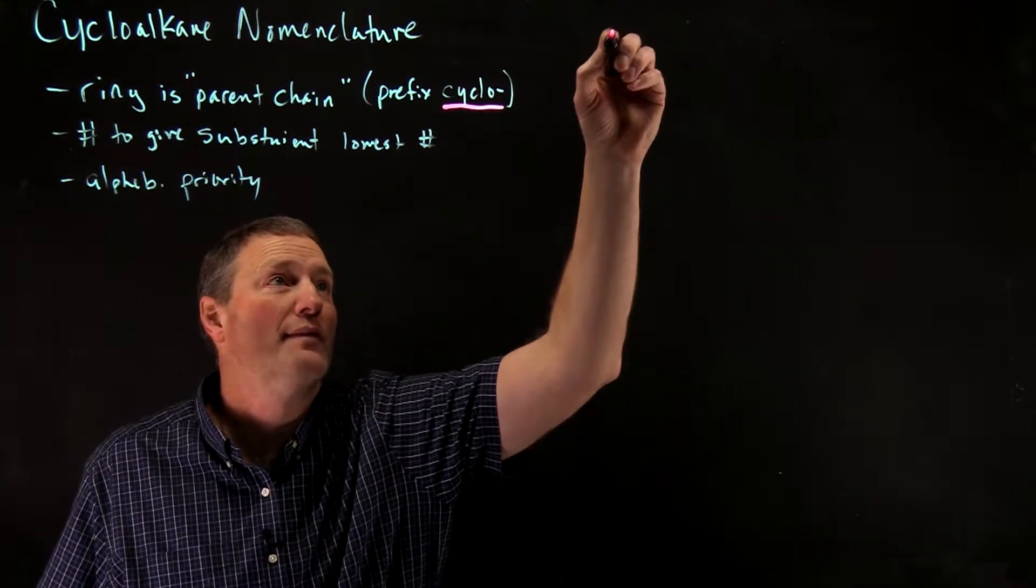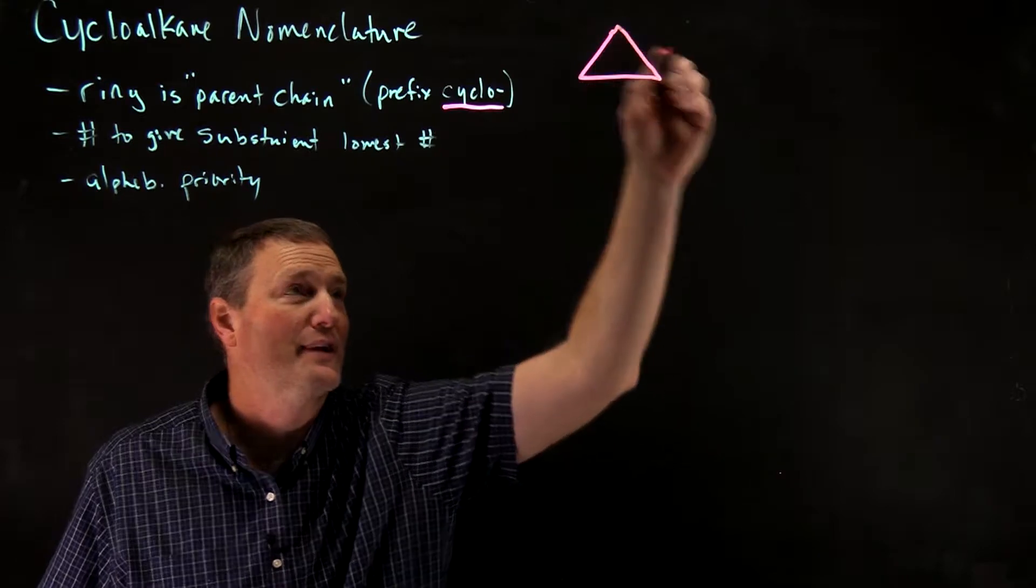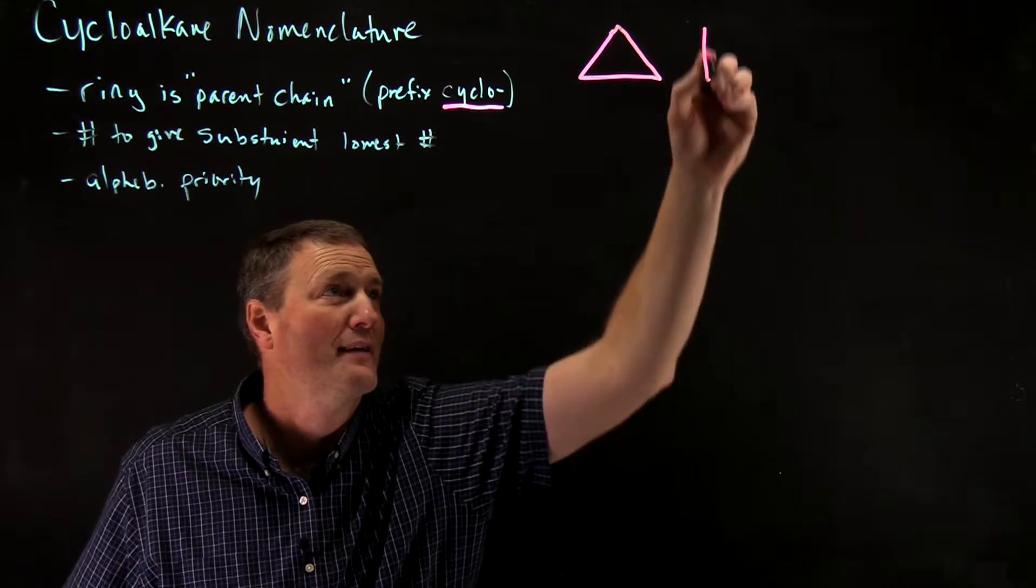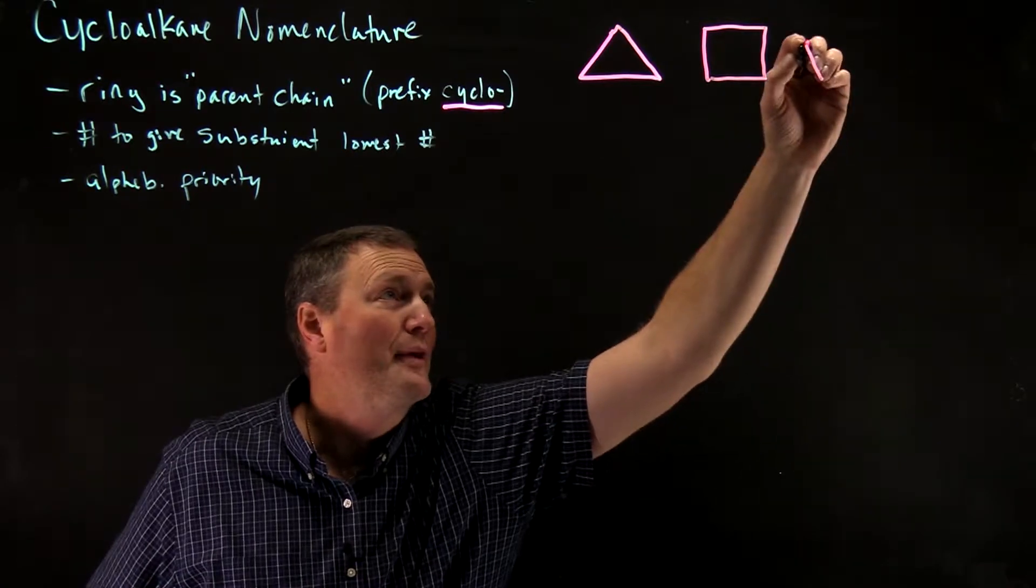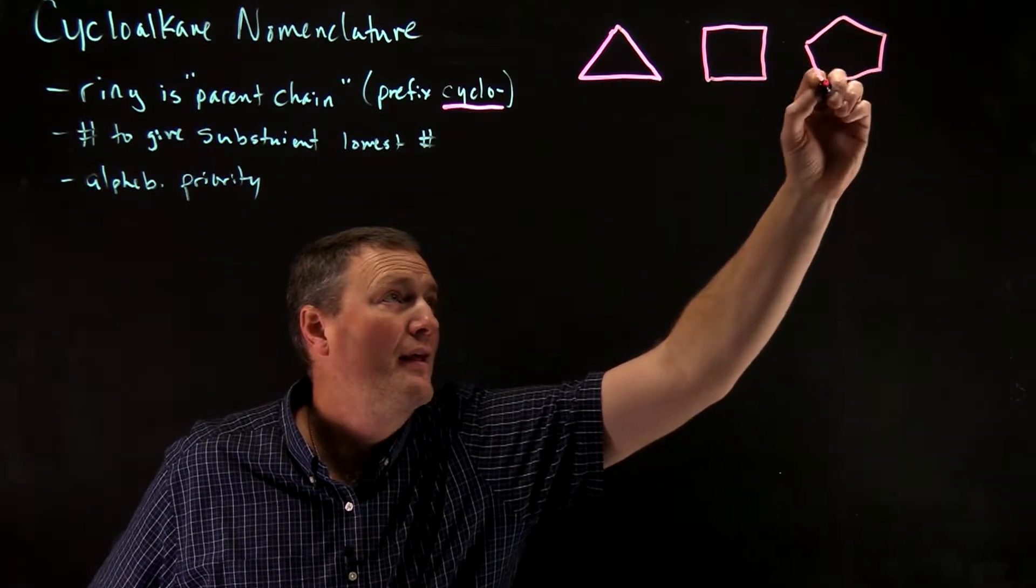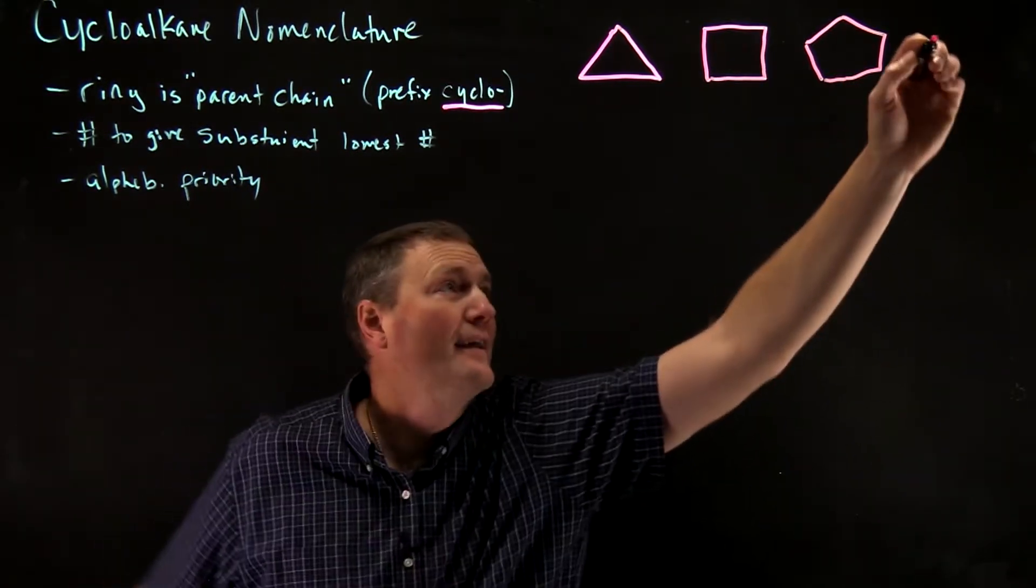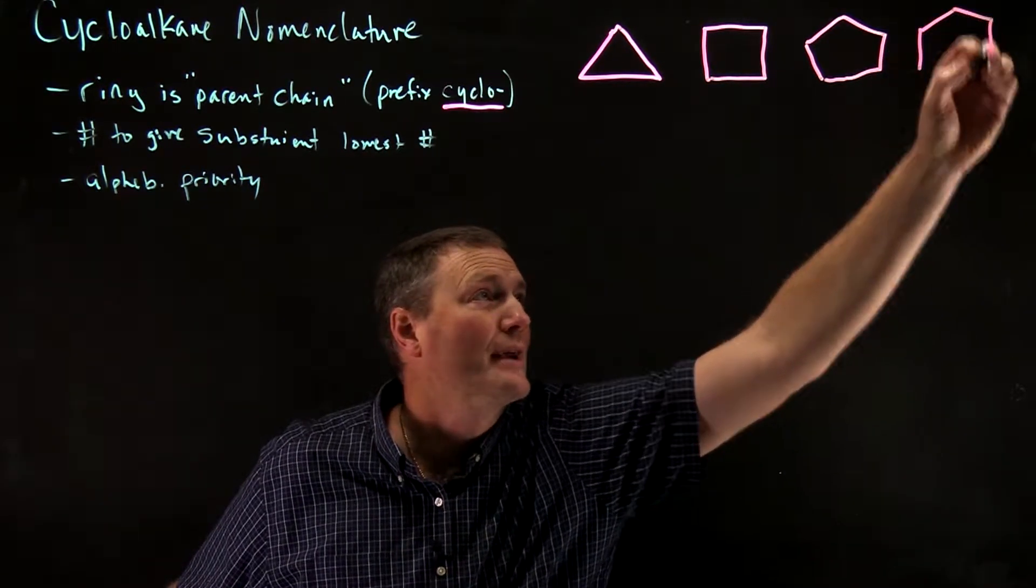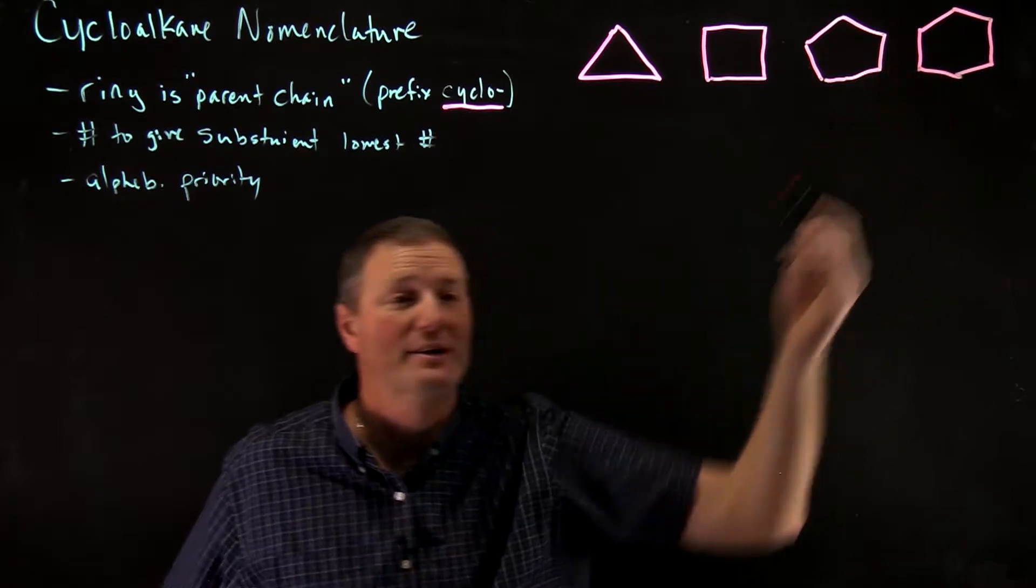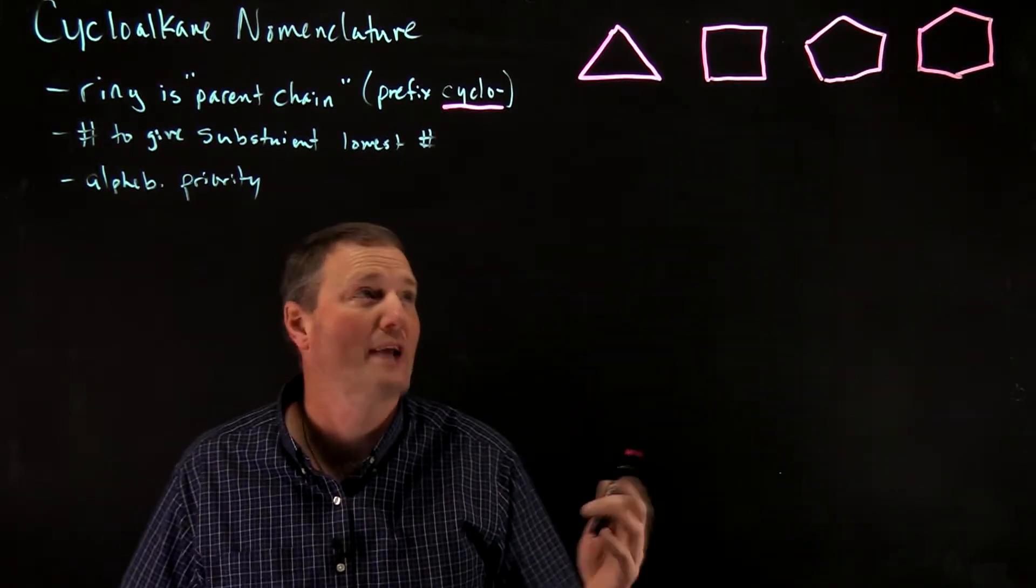This is going to look like a geometry lesson here. So we have a three-membered ring, a four-membered ring, a five-membered ring, and then lastly a six-membered ring. Now you can have larger ring structures than these, but these are the most common.